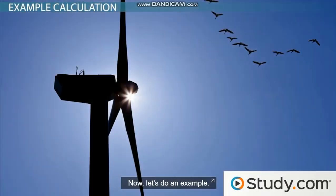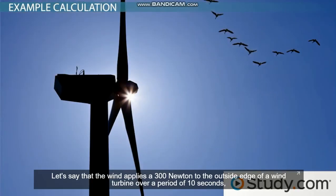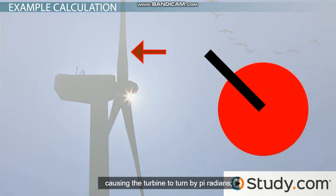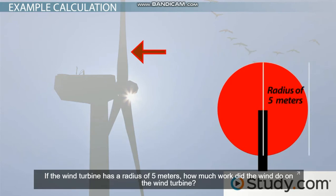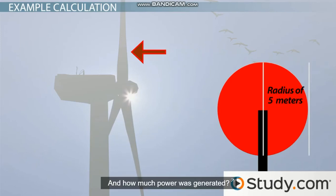Now let's do an example. Let's say that the wind applies a 300 Newton force on the outside edge of a wind turbine over a period of 10 seconds, causing the turbine to turn by pi radians. That's 180 degrees. If the wind turbine has a radius of 5 meters, how much work did the wind do on the wind turbine? And how much power was generated?